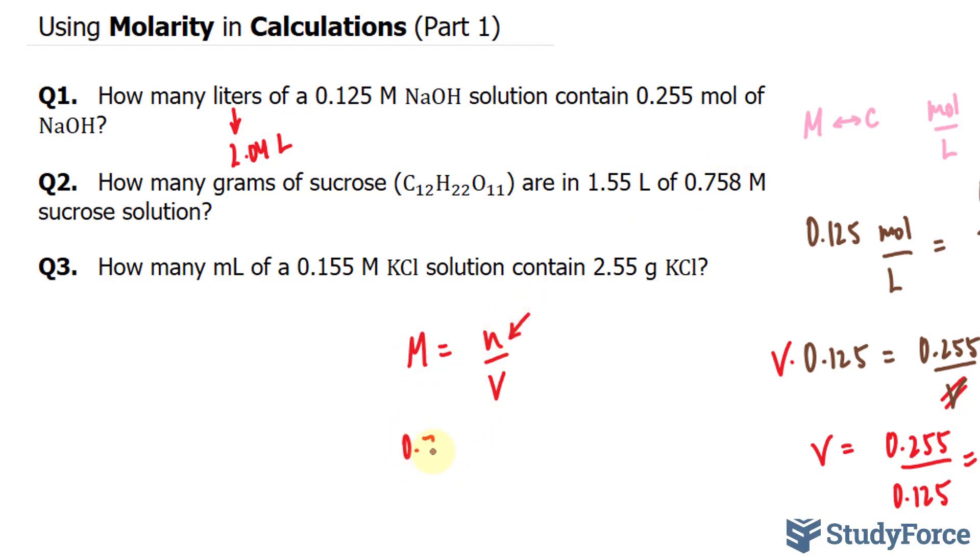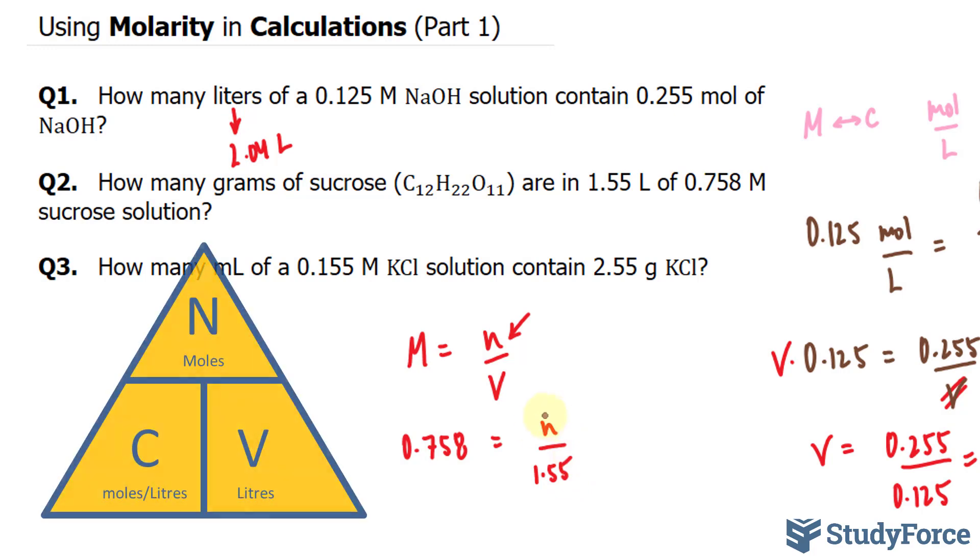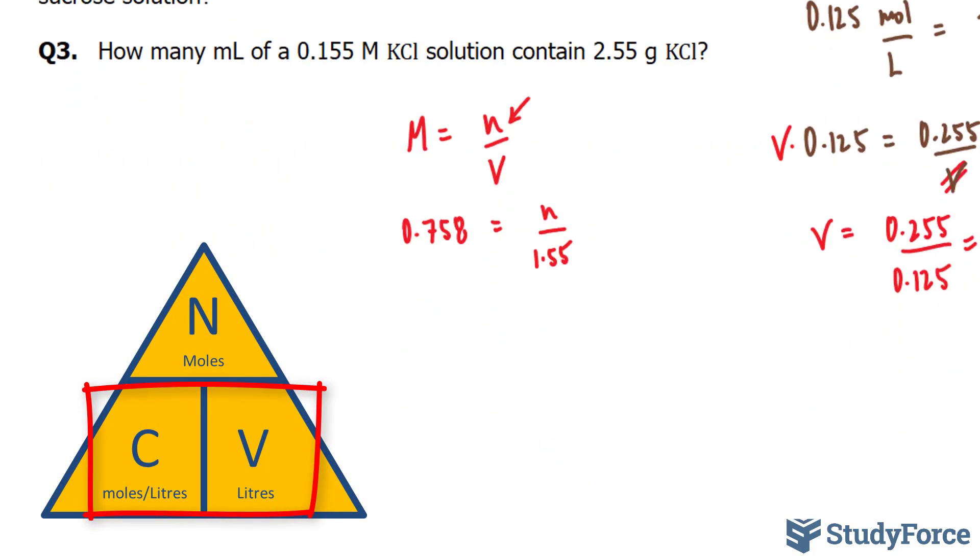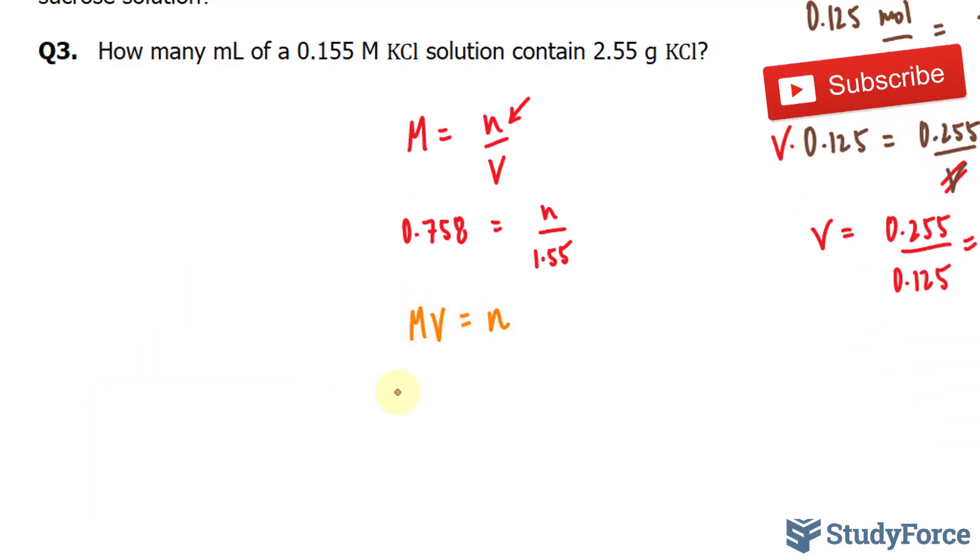So I have 0.758 is equal to N over 1.55. To find the number of moles, all we do is multiply V with M. So M times V is equal to N. 0.758 times 1.55 is equal to N.